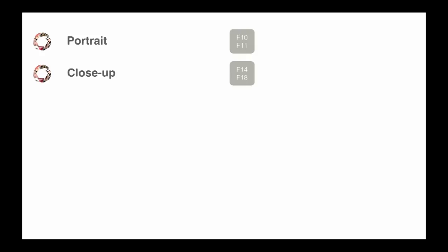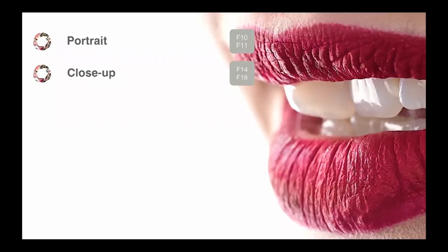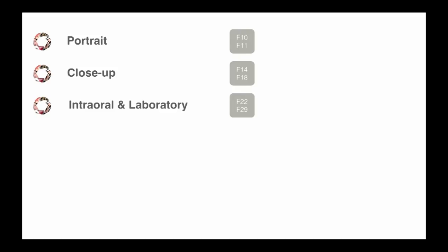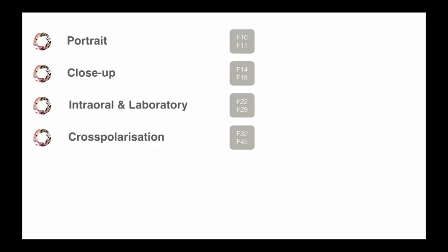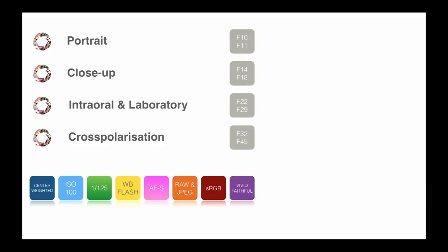If you want portraits, I recommend f/10 or f/11 and you will be able to do that kind of photography directly from the camera. For close-up photography, f/14 or f/18. Intraoral and laboratory, f/22 or f/29, and you can make intraoral photos with a lot of texture and quality. Cross-polarization is for fun. If you create slices of the tooth, you need f/32 or f/45. These settings you put in the camera only once and then forget about all other settings — the only thing you need to remember is these f-numbers.